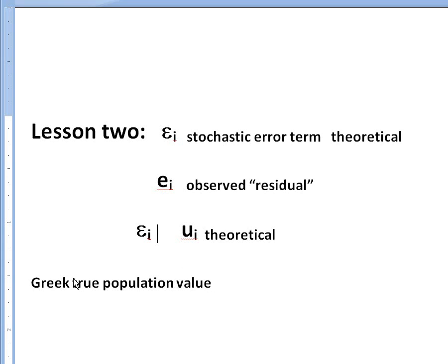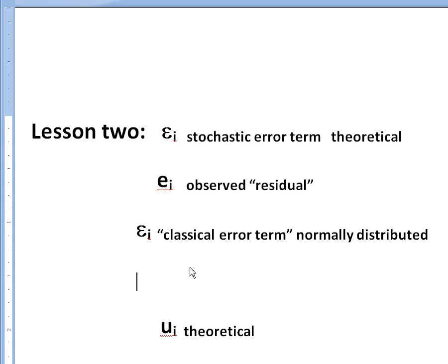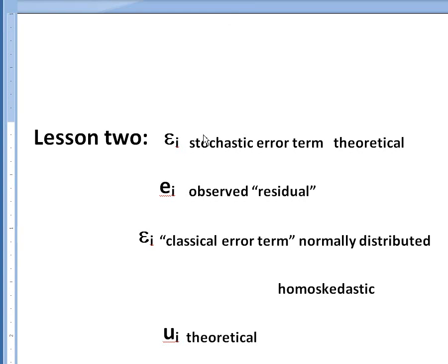People will assume that this epsilon is what we call a classical error term. Now the term classical here comes from the classical linear regression model or the Gauss-Markov theorem, where what we're talking about is that it meets all these nice assumptions about error terms that we want to see, for example that it's normally distributed and that it is homoscedastic. That's what we want to see about our classical error terms: no heteroscedasticity, no serial correlation, so homoscedastic.